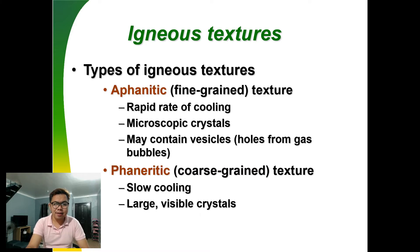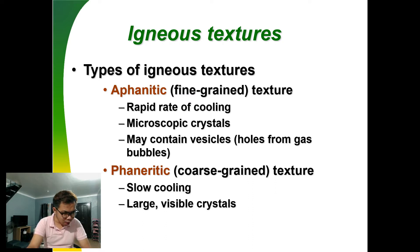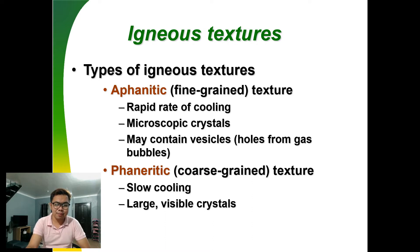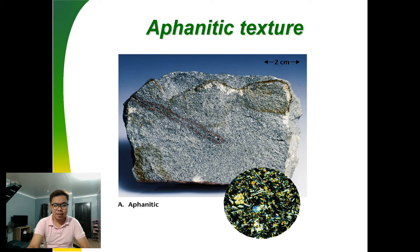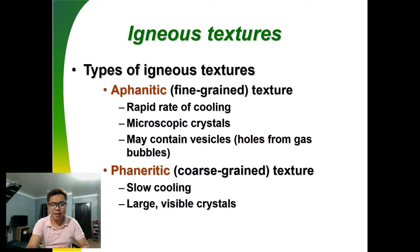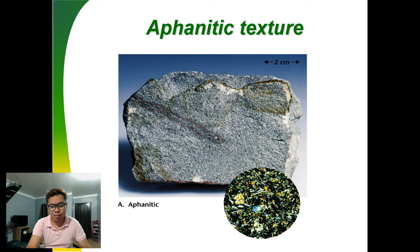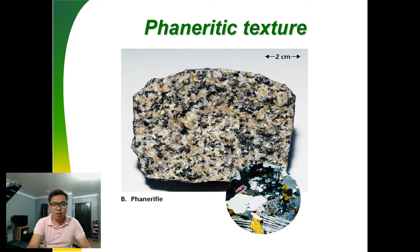For igneous rock textures, aphanitic or fine-grained texture means the rock cooled rapidly, producing microscopic crystals. It may also contain vesicles or holes due to gas bubbles. Phaneritic or coarse-grained texture means the crystals are visible and raised — this indicates slow cooling occurred. With aphanitic texture, a microscope is needed to see the crystals, while phaneritic crystals are clearly visible to the naked eye.